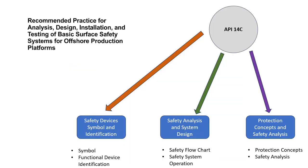API 14C mainly covers three different things: first, safety device symbols and their identification; second, safety analysis and system design; and third, protection concept and safety analysis. In the safety device symbols section, it covers different symbols used and functional device identification. In the safety analysis section, it covers safety flow charts and safety system operation. Under protection concept and safety analysis, it addresses the protection concept and safety analysis methods.